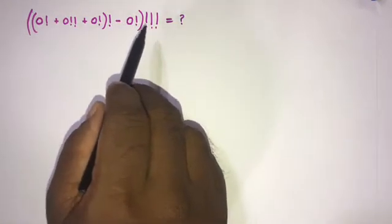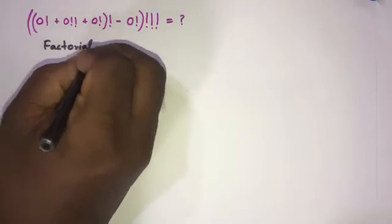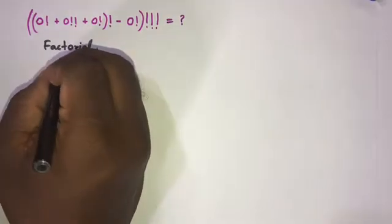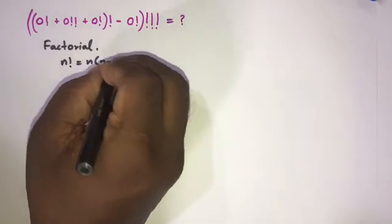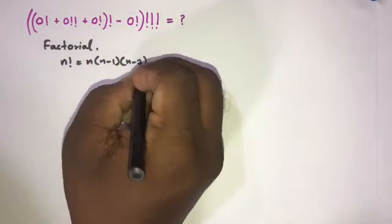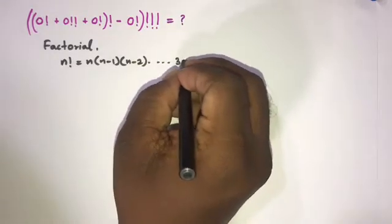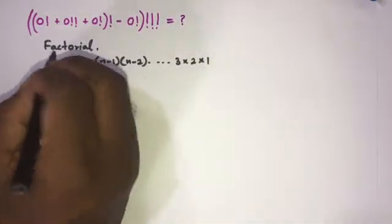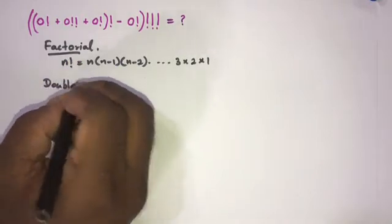First, I am going to talk about the simple definition of factorial. For a positive integer n, n factorial is equal to n times (n minus 1) times (n minus 2) and so on down to 3 times 2 times 1. Now I am going to talk about double factorial.